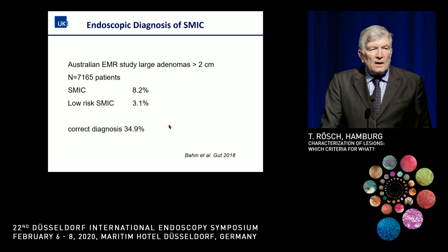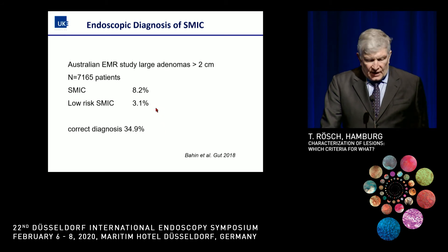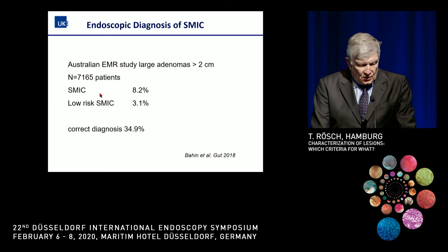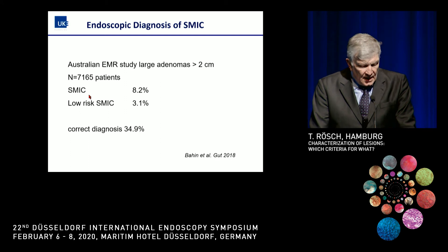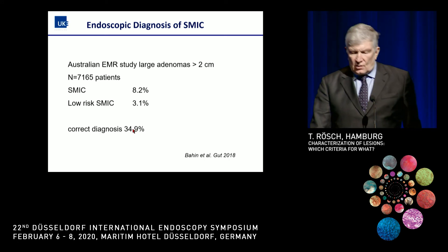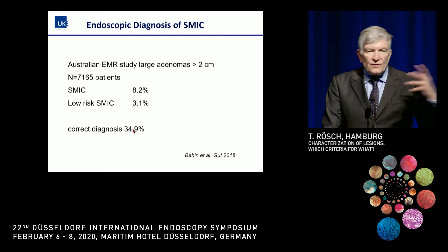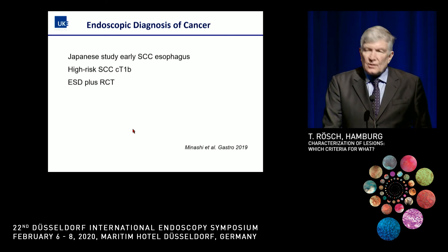Similarly in Australia, in another real-world study with 1,765 patients, the rate of SMIC was 8%, with less than half being low-risk, and the correct diagnosis achieved in only a third of cases. So if you mix this with real-life benign polyps all the time, performance is not very good.